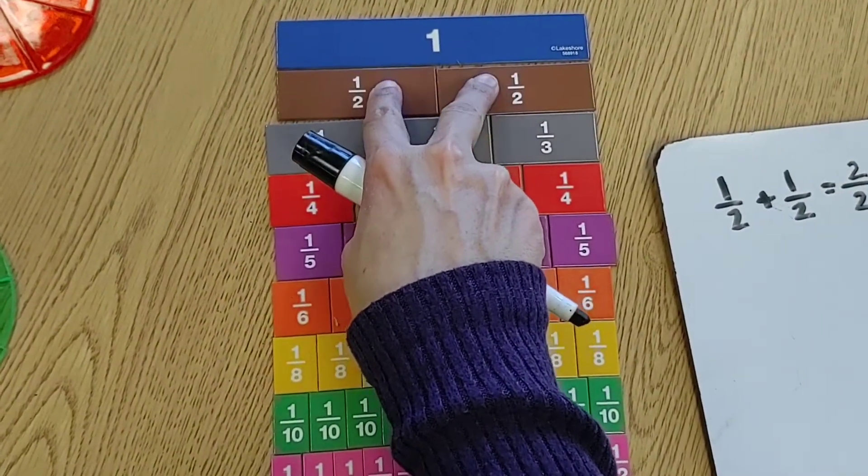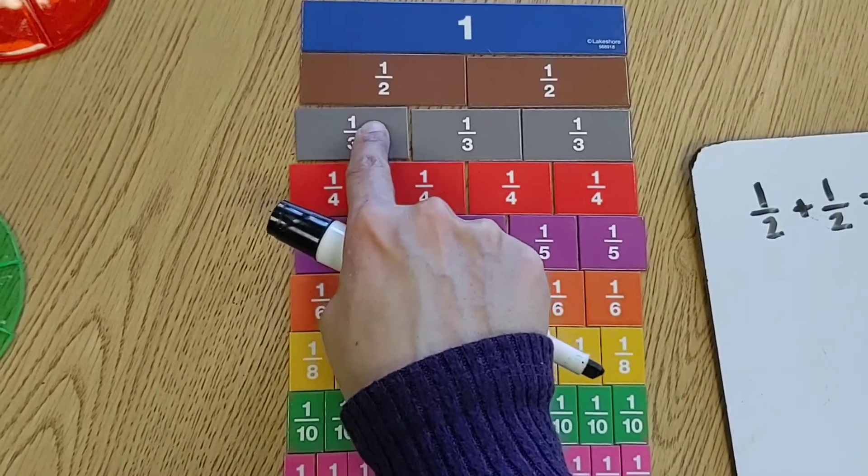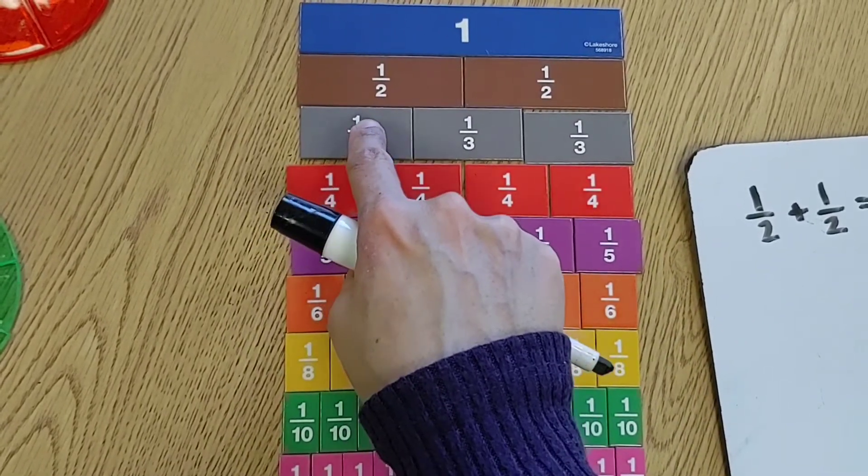So that's one whole. You can see by looking at our fraction bars that two halves equals a whole. So if two halves equal a whole, then when we talk about thirds, we actually need three of them.